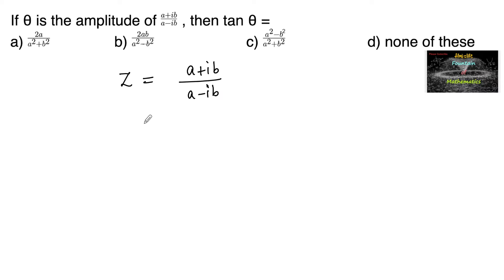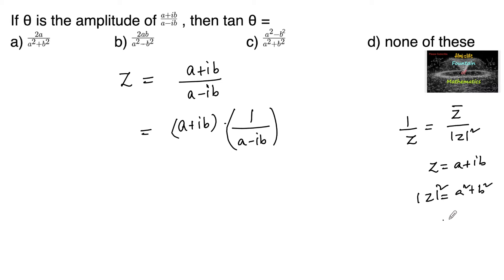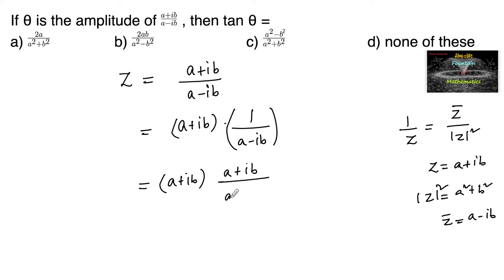Let us simplify this, which is equal to (a-ib) multiplied by 1/(a+ib). Since we know that for a complex number, 1/z is equal to conjugate of z upon mod z squared, and for any complex number z = a+ib, mod z squared is equal to a squared plus b squared and z-bar conjugate is equal to a-ib. So we can write (a-ib) into the conjugate of (a+ib) upon mod of (a+ib) squared, which is a squared plus b squared.